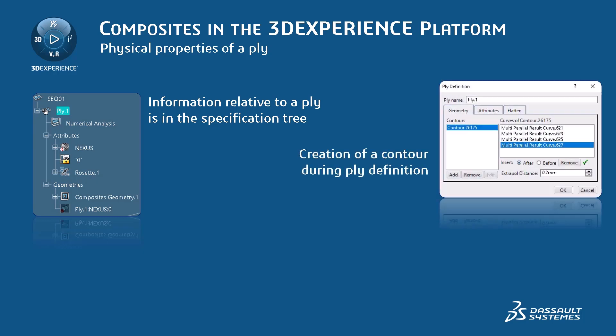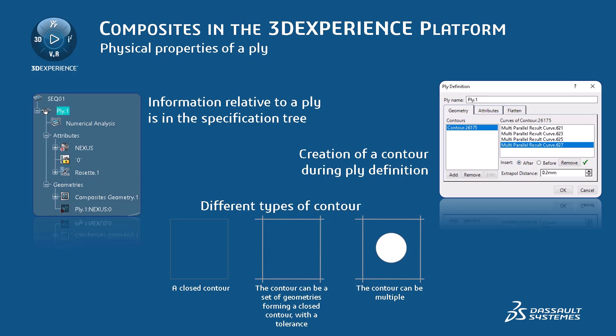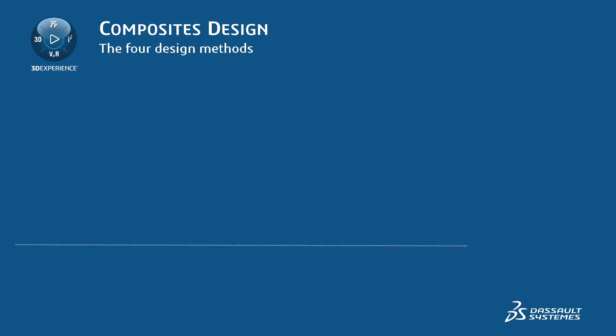The contour can be one geometry forming a closed contour, a set of geometries forming closed contours, or multiple. The directions are usually 45 degrees, minus 45 degrees, 90 degrees, and 0 degrees. All the information relative to the ply is stored and visible in the specification tree. If picking the plies in the 3D view is necessary, change the stacking graphic properties to pickable. There are several unique methods for designing with composite materials, helping users create flexible, associative models. Each offers unique benefits to help users easily perform and manage design iterations with the best-in-class ply stacking-based design.